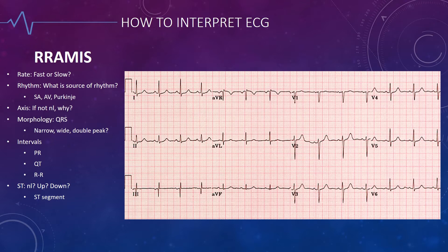Here's how you do rate — it's real simple. The rate should be between three and five big boxes. If the rate is less than three big boxes, it's too fast. If the rate is more than five big boxes, it's too slow.